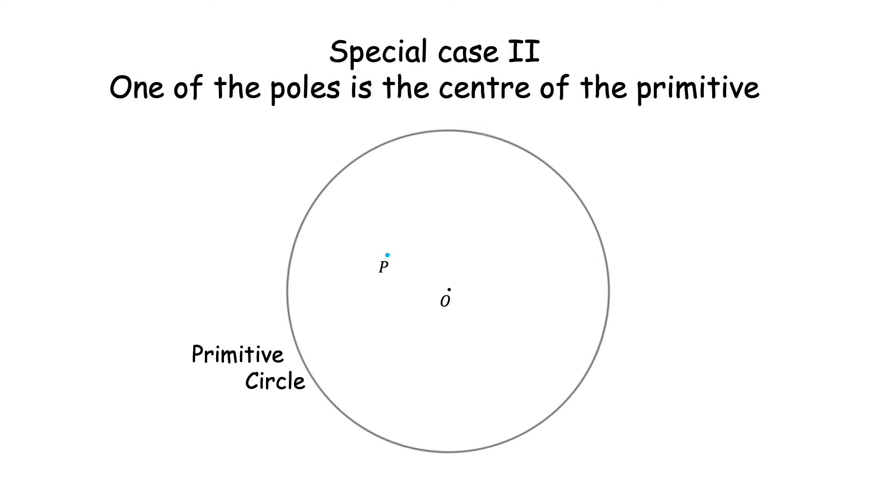So here, all we have to do is to draw a diameter of the primitive circle through P and that's the great circle. This diameter is the great circle passing through P and O. This is the great circle of infinite radius. It's actually a straight line.